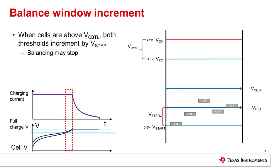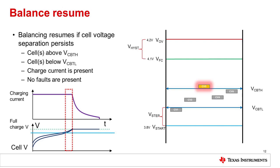When all the cells are above the lower threshold, both thresholds will increment by a value of V-step. In this example, balancing will stop since there are no longer cells above the high and below the low threshold. At this point, the charge current is still high, and as the cells rise once again, since there are cells above and below the two thresholds, balancing resumes on those above the high threshold.